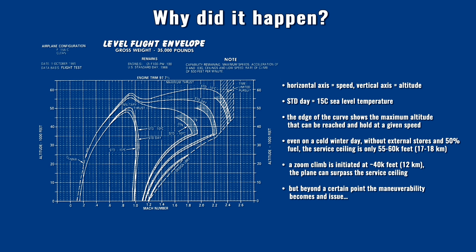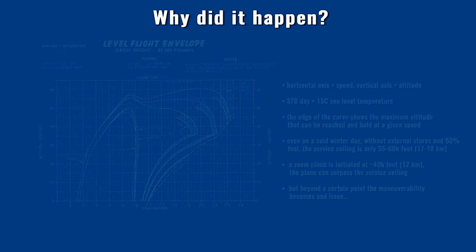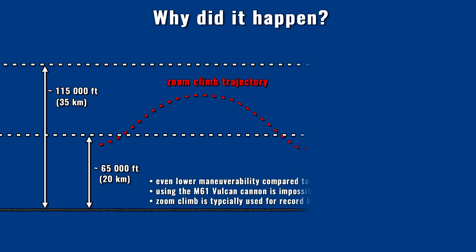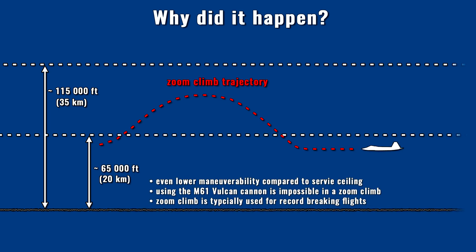Regarding the Raptor, a performance envelope diagram with full afterburner power is not publicly available. However, since the plane's aerodynamics are optimized for maneuvering air combat in addition to stealth capability, its maximum ceiling can be assumed to be around 60,000 feet in an average air combat configuration. Fighter jets can climb above their nominal ceiling using their momentum — a maneuver called the zoom climb.